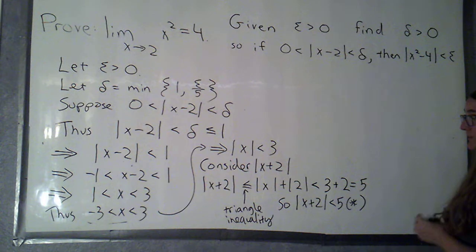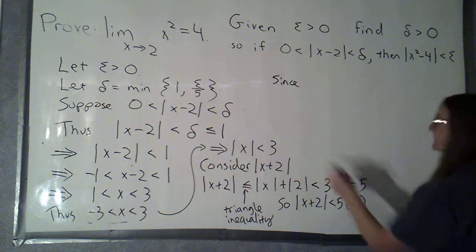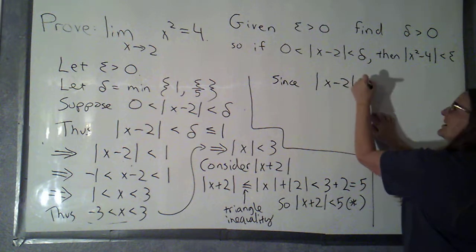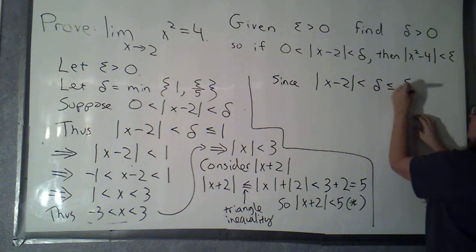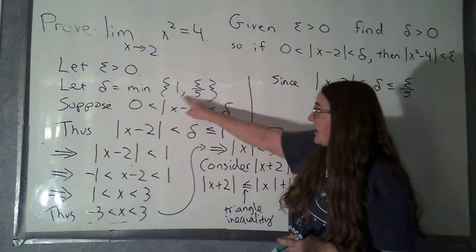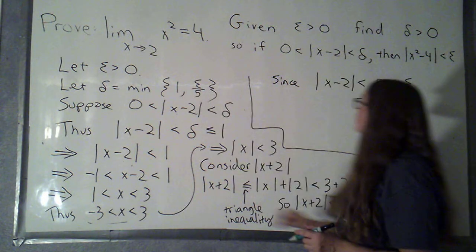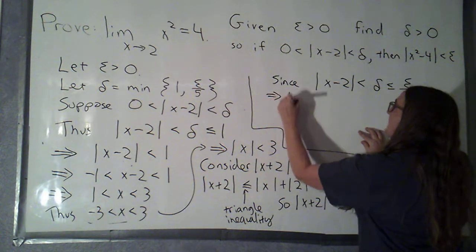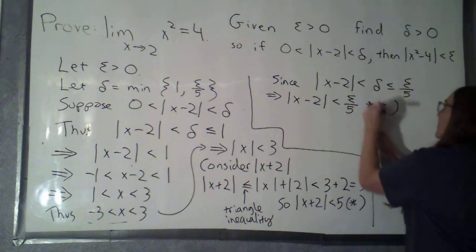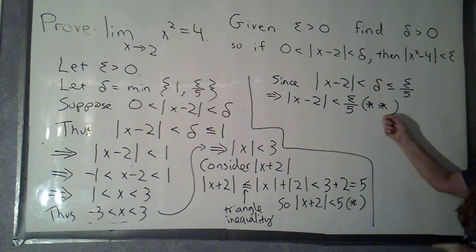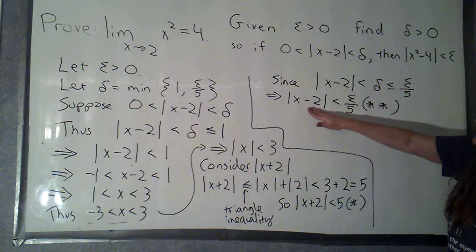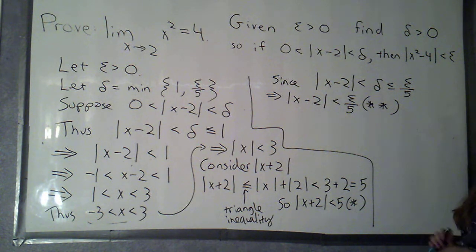I'm also able to say: since the absolute value of x minus 2 is less than delta, which is less than or equal to epsilon over 5 — now looking at the other choice — this implies that the absolute value of x minus 2 is less than epsilon over 5. I'll label that double star (★★). So by two separate arguments I've controlled the size of both factors of the absolute value of x squared minus 4.